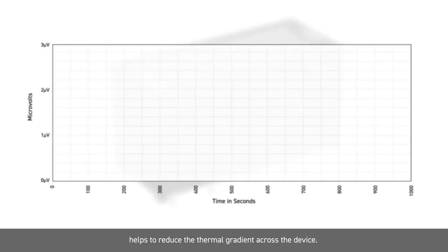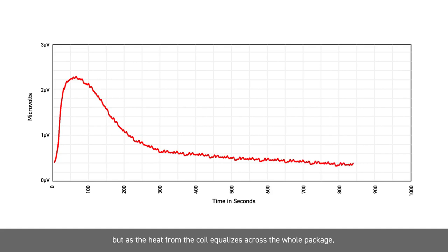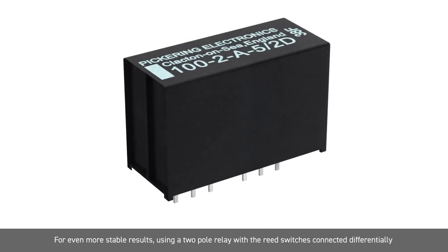The thermal EMF generated by the relay alone will peak when the coil voltage is initially applied, but as the heat from the coil equalises across the whole package, the resulting thermal gradient can see it stabilise at a lower level.